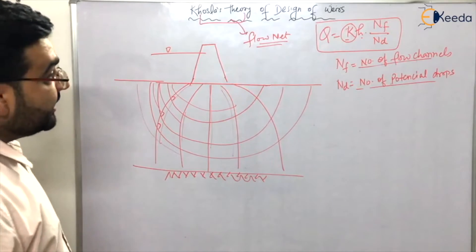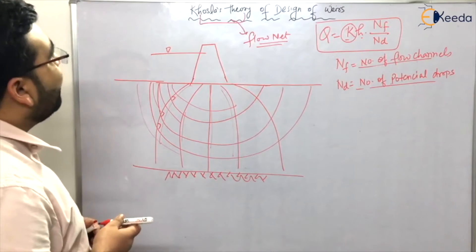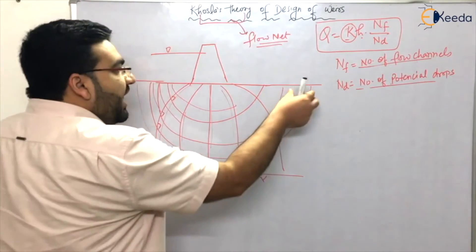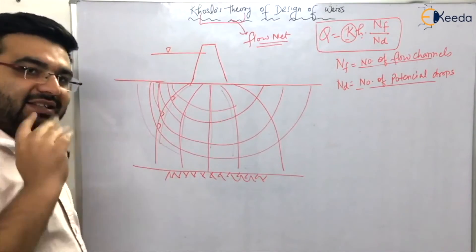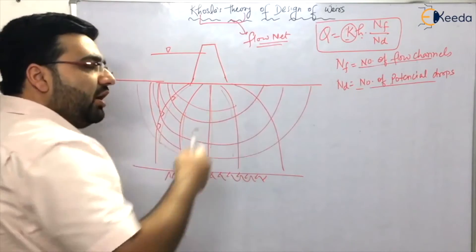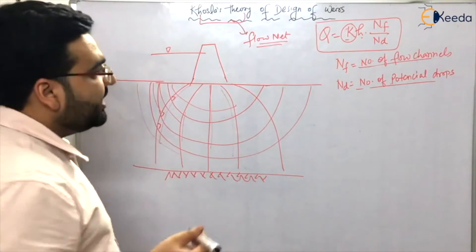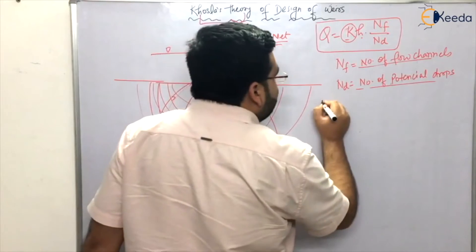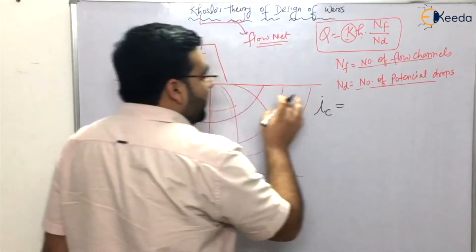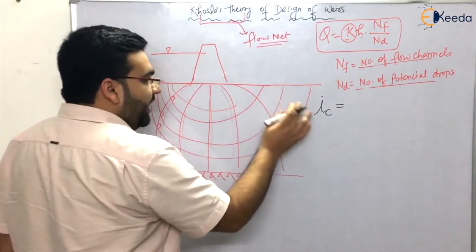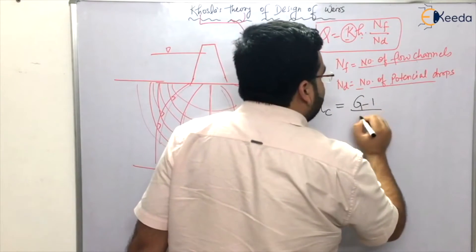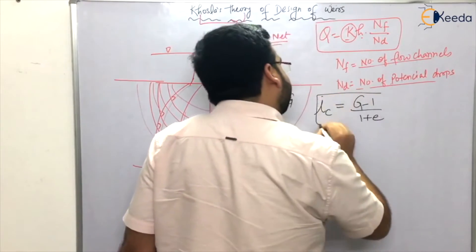Now let's come to Khosla's theory. You should know that if the exit gradient is very high, there can be piping condition, a boiling condition at exit. The critical exit gradient is given by: if the soil beneath the foundation has specific gravity G, then critical gradient ic = (G - 1) / (1 + e).